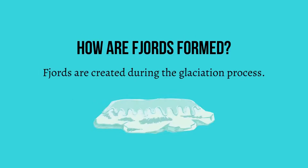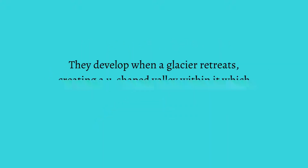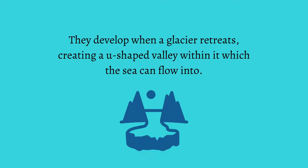How are fjords formed? Fjords are created during the glaciation process. They develop when a glacier retreats, creating a U-shaped valley within it which the sea can flow into.